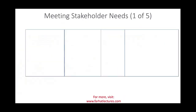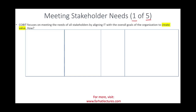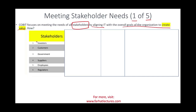Starting with the first principle, which is meeting the stakeholder needs — principle one of five. COBIT focuses on meeting the needs of stakeholders by aligning with the overall goals of the organization to create value. First we need to know who the stakeholders are, and what aligning means — moving in the same direction. The stakeholder's benefit and the company's IT should move in the same direction to create value. The first stakeholder could be the investors or the owners.